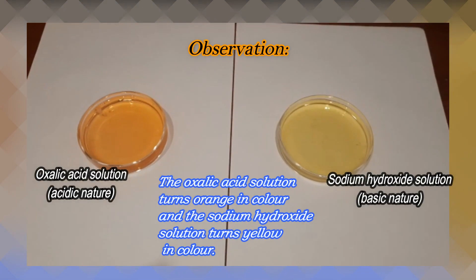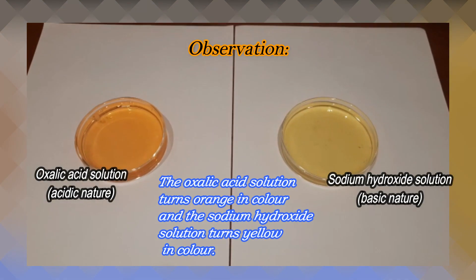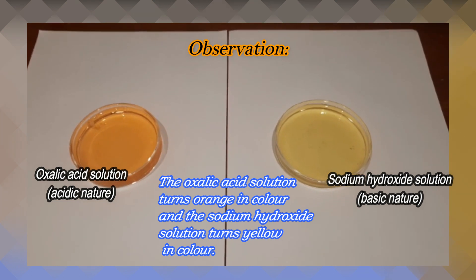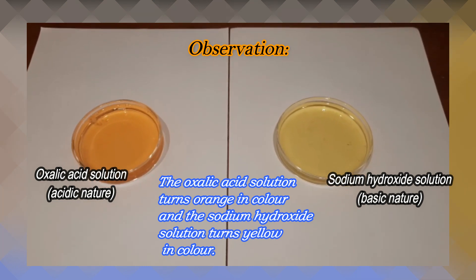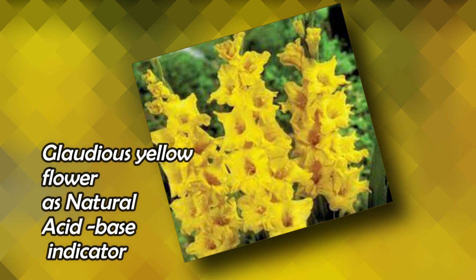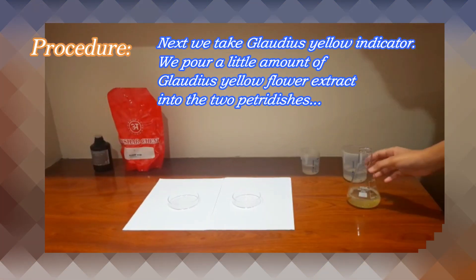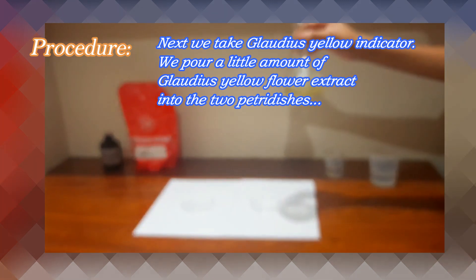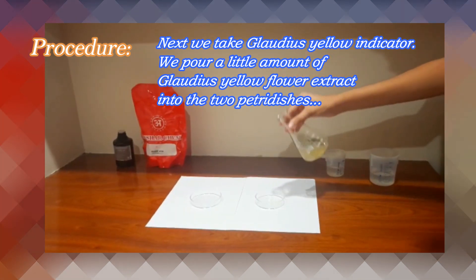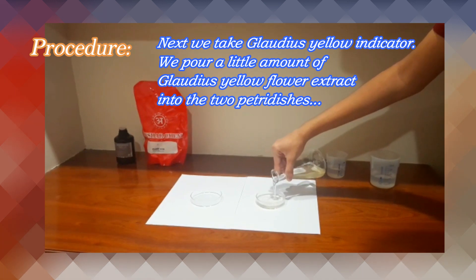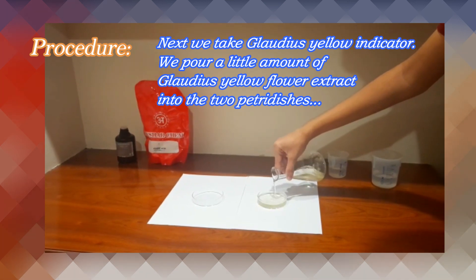The oxalic acid solution turns orange in color and the sodium hydroxide solution turns yellow in color. Gladiolus Yellow flower as a natural acid-base indicator. We pour a little amount of gladiolus yellow flower extract into the two petri dishes.